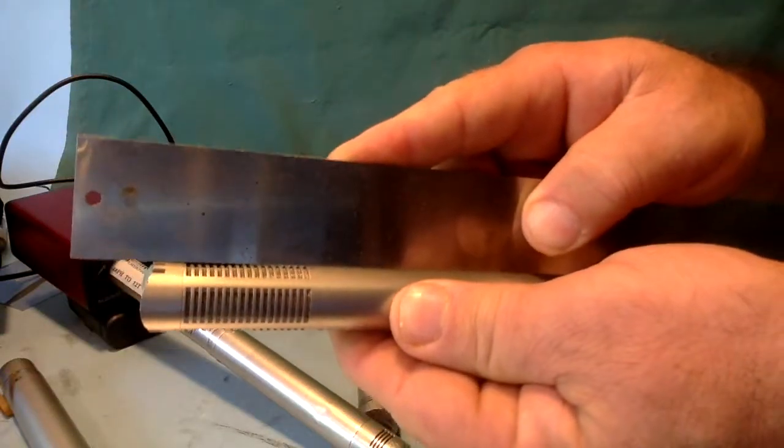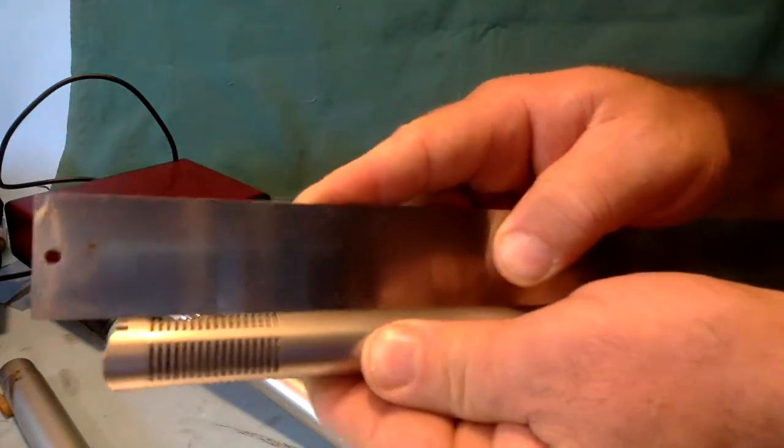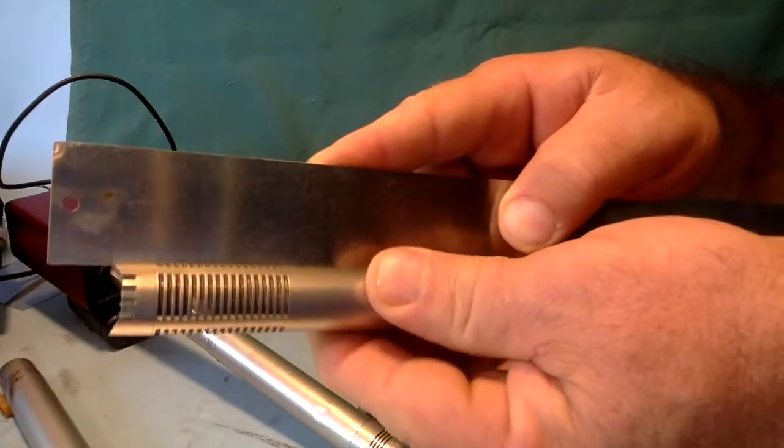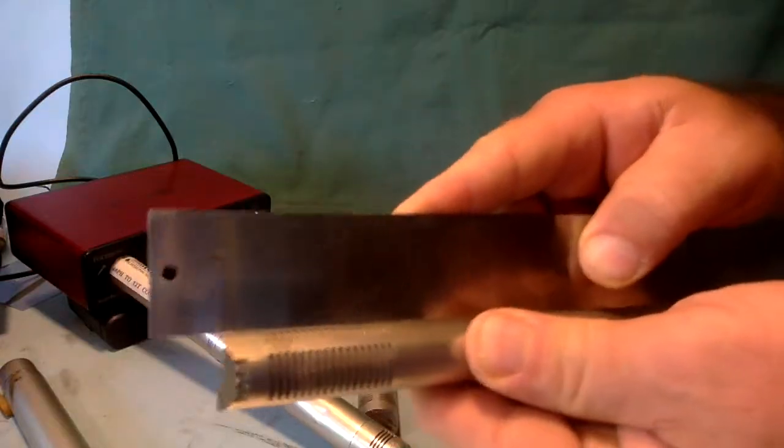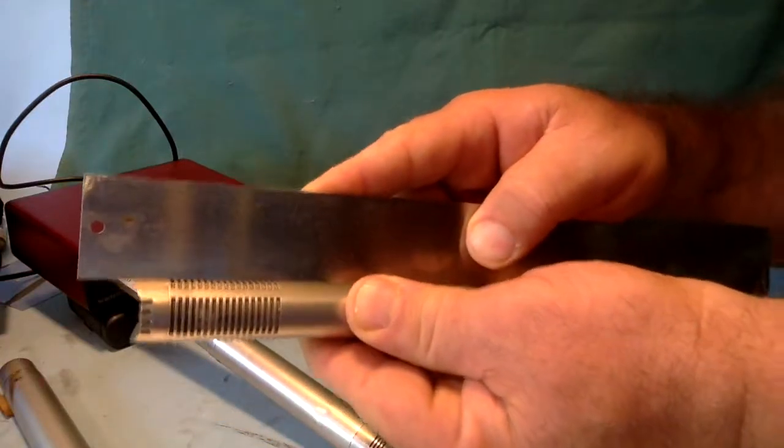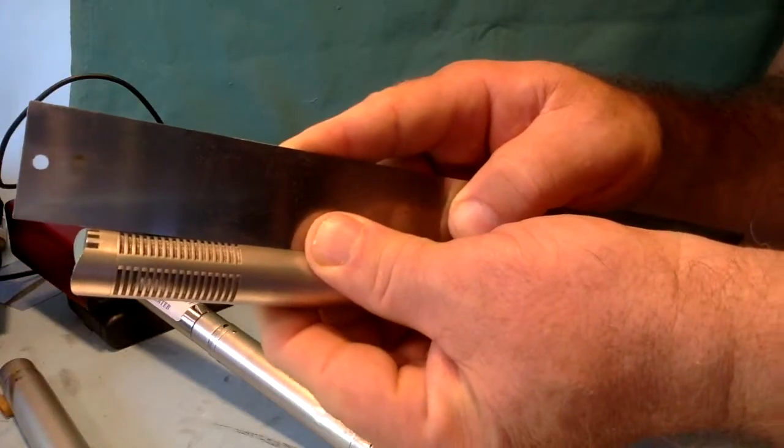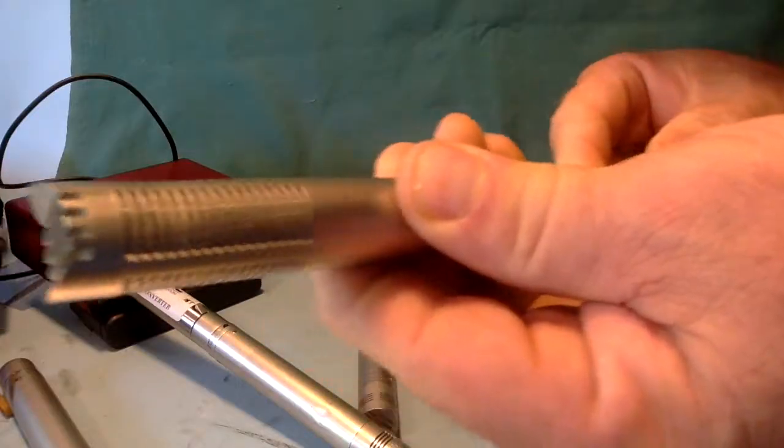But this one is not. You can see the gap. There it is. You can see the bend there, where this one is straight. There's no gap. Going back to this one, there's definitely a bend in the tines. You can see it. So that's what we're talking about.